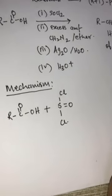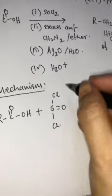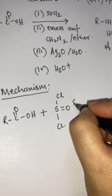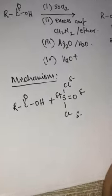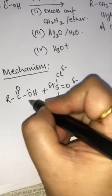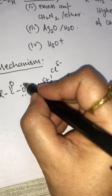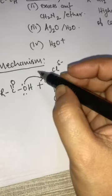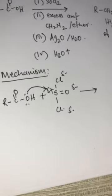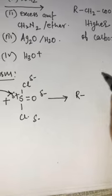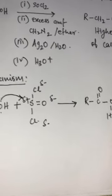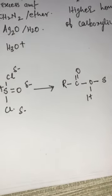If we look at the inductive effect — that is the polarity of the molecule — all are highly polar molecules. A delta-plus charge has been developed on the sulfur. Since this site is electron-deficient and we have a lone pair of electrons on oxygen, the oxygen attacks over here and you get the formation of a sulfur-containing adduct.